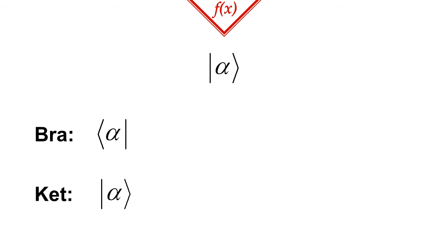Something being a ket vector is indicated by an asymmetric bracket that looks like the second half of the inner product. In case of finite dimensional space, you can think of ket vectors as column vectors.